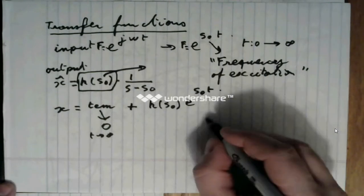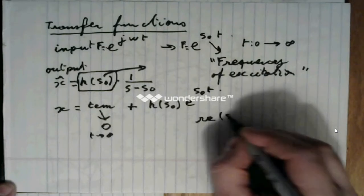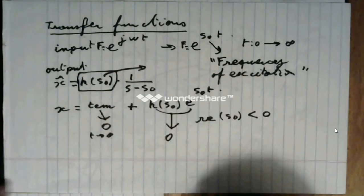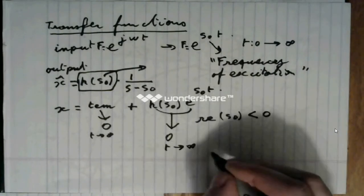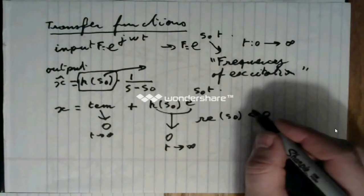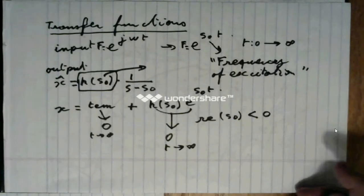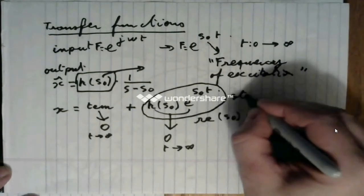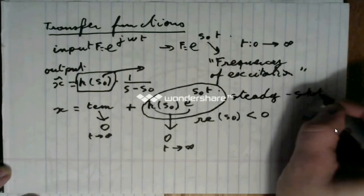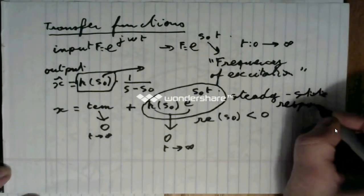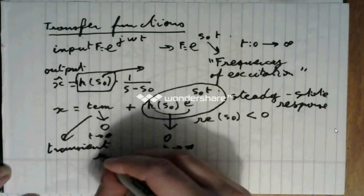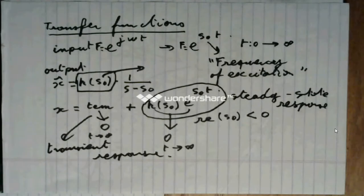Now, notice that if the real part of s zero is less than zero, then this term also turns towards zero when t turns towards infinity. However, by similarity with what we have seen with sinusoidal and cosinusoidal inputs, we will nevertheless often call this term the steady state response, and this one the transient response of the system.